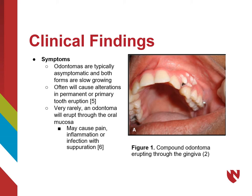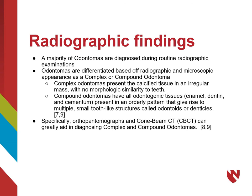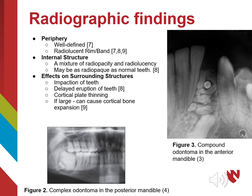Odontomas are typically asymptomatic and typically go unnoticed until a patient has routine radiographs taken in a dental office. There are two subtypes of odontomas differentiated based on their radiographic appearance. The first subtype is a complex odontoma, which appears as an irregular radio-opacity with no resemblance to teeth. The second subtype is a compound odontoma, which has multiple radio-opacities clustered together that resemble small teeth radiographically.